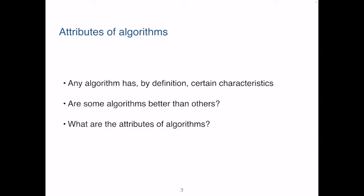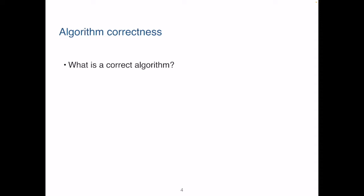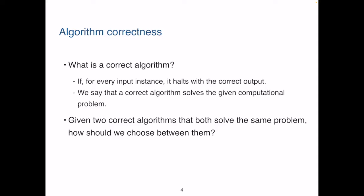Similarly, attributes of algorithms may include correctness, ease of understanding, elegance, and efficiency. The most essential attribute of an algorithm is correctness. How do we know an algorithm is correct? It should hold and produce the correct output for every possible input instance. Once we know an algorithm is correct, we can go on and compare their other attributes such as how intuitive they are, how elegant they are, and the last, their efficiency in terms of both space and time. In this course we mainly focus on time efficiency of an algorithm.